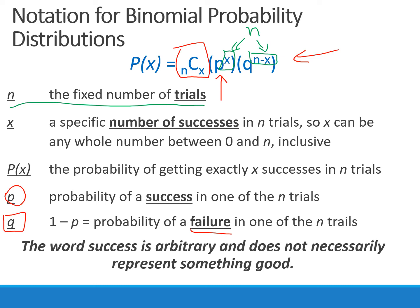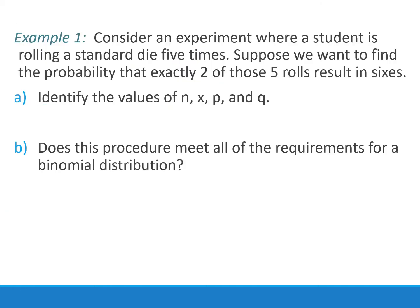The words success and failure are arbitrary. They don't necessarily mean something good. For example, let's say we're rolling a standard die five times, and we want to find the probability that exactly two of those five rolls result in sixes. We'll start by identifying the important values n, x, p, and q.